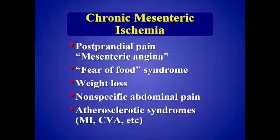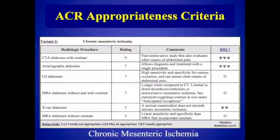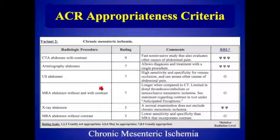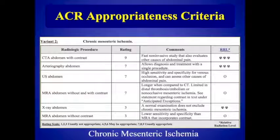Classically, patients with chronic mesenteric ischemia may have what's called mesenteric angina — pain after eating. The pain is typically nonspecific, and these patients usually have other atherosclerotic syndromes, such as lower extremity arterial occlusive disease, history of MI or CVA. If you look at the ACR appropriateness criteria, ultrasound is listed right below CT angiography for the evaluation of chronic mesenteric ischemia, right there with conventional arteriography. And of course the advantage is there's no radiation associated with our ultrasound exam.